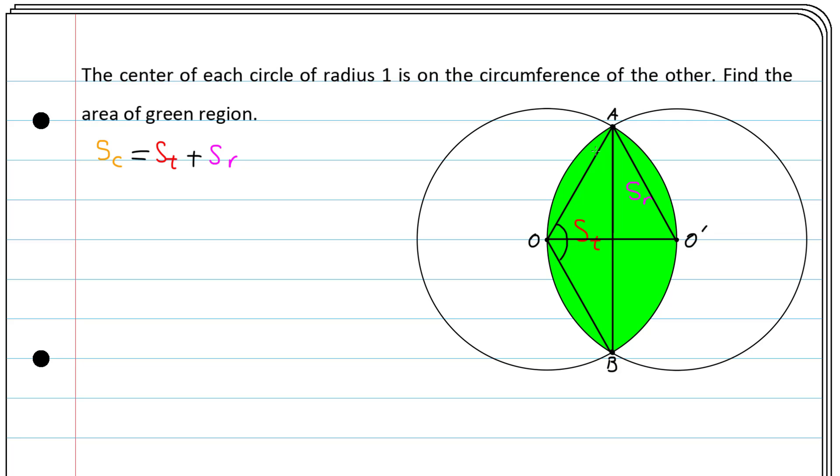Because OA and AO' and OO' are all radii of the circles. So OA is 1, O'A is 1, and OO' is 1 too. So the angle at O' is 60 degrees, at A is also 60 degrees, and this one here is 60 degrees too.